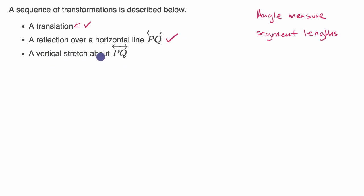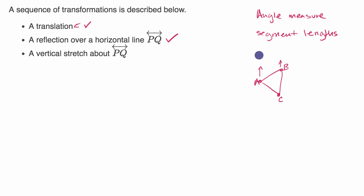Then they say a vertical stretch about PQ. Let's think about what a vertical stretch does. If I have some triangle ABC that looks like this, and we do a vertical stretch — we stretch the sides so that A prime is over here and B prime is now over here — the measure of angle C is for sure going to be different, and my segment lengths are for sure going to be different. A prime C prime is going to be different than AC in terms of segment length.